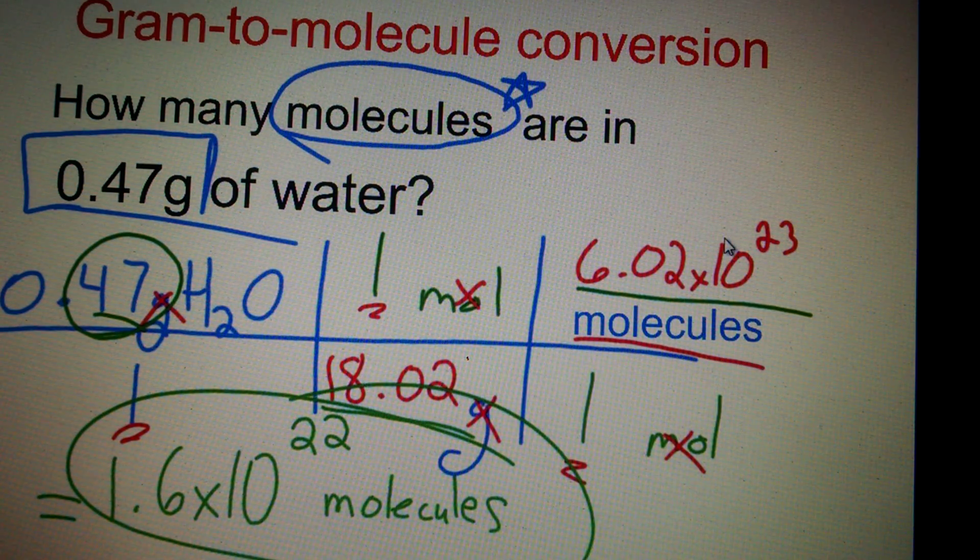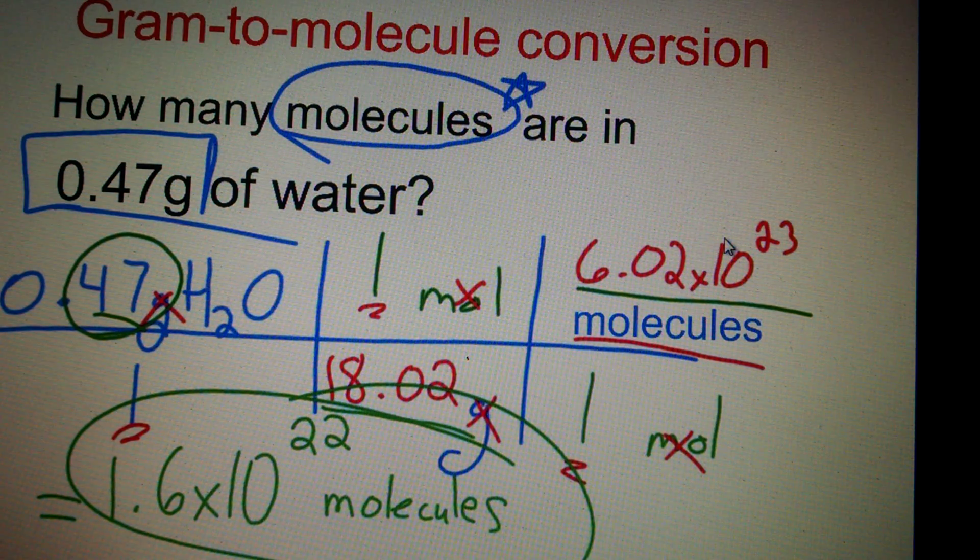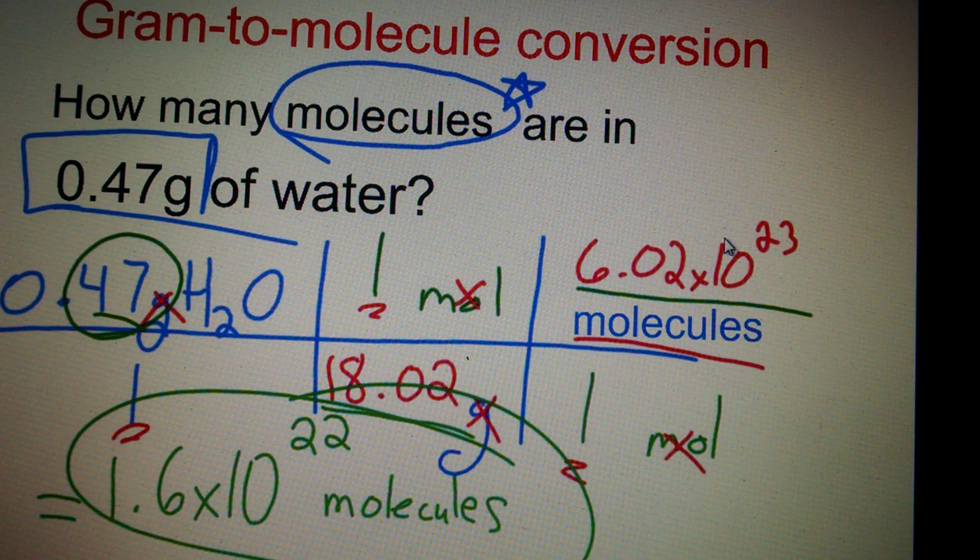Two sig figs. We have a unit there. We have the work shown. Everything's correct. Correct molar mass. Units are canceled. Everything is fine.